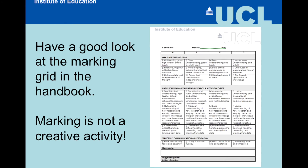Have a good look at the marking grid in the MA Handbook. There are seven areas of consideration — seven criteria — each one arranged in four groups: A, B, C, and D. It states what has to be achieved in order to gain an A grade, or equally what would result in a D grade. Some of it is around criticality, some around the overall grasp of the assignment, and the clarity and focus with which you write.